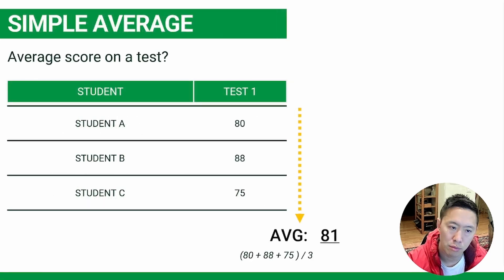So as an example, say you have one test and three students. To get the average, you just sum all three of those numbers up, divide by the number of items, in this case it's three, for an average of 81.